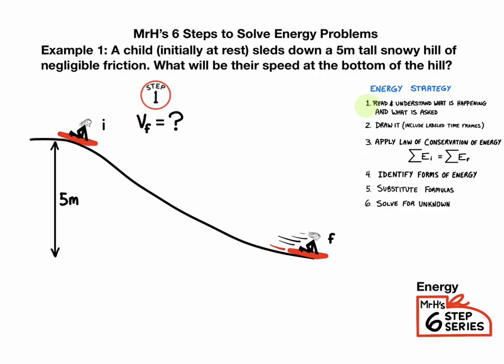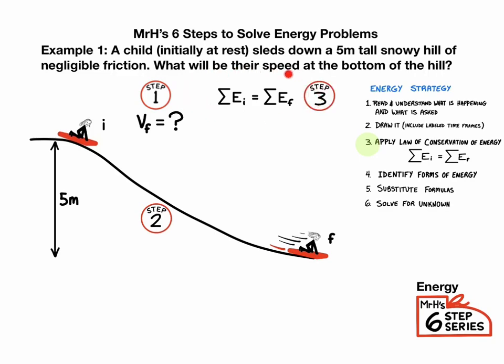Step two is to draw a picture of what's happening. Draw a labeled picture showing the initial and the final moments — at the beginning when they first start to slide, and at the bottom of the hill when they're finished. Step three is to apply the law of conservation of energy. Step three looks the same every time: energy initial equals energy final.